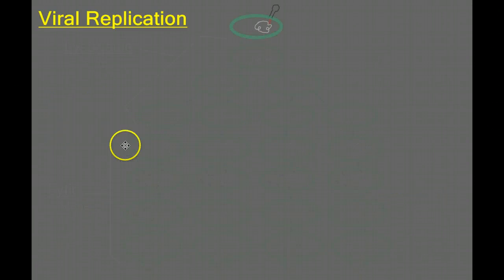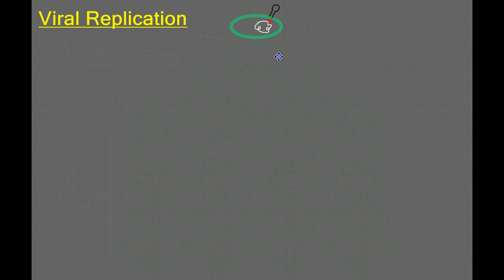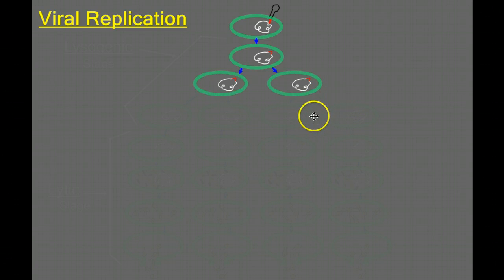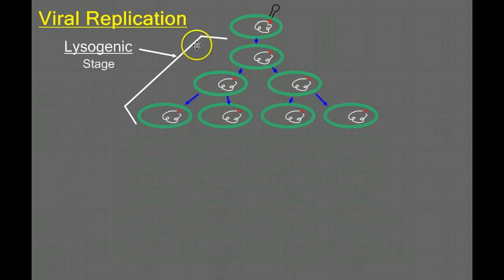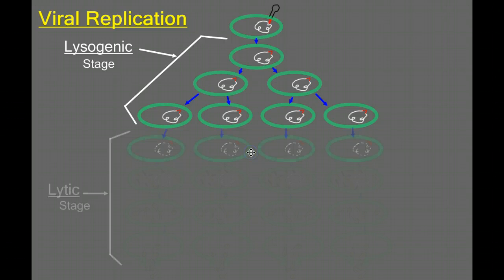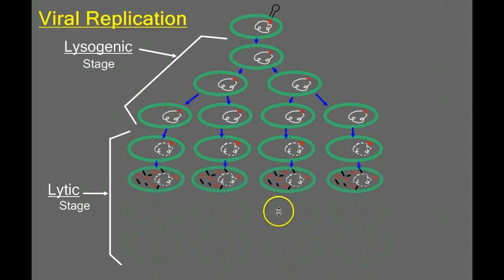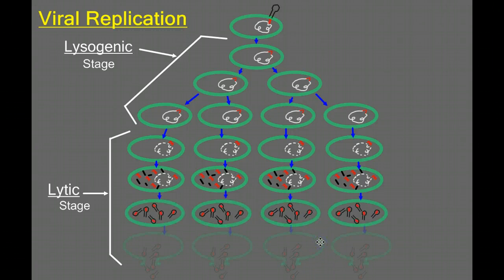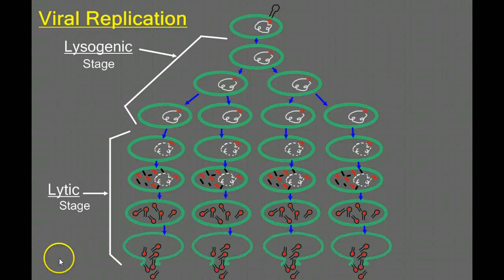So let's recap the lysogenic cycle. Here's our bacteriophage infecting our bacterial cell, inserting itself into the host DNA, and we have the passive DNA replication during the lysogenic stage. Then we enter the lytic stage: we excise ourselves, build our viral components, assemble them, and finally burst the cell to release those viruses.